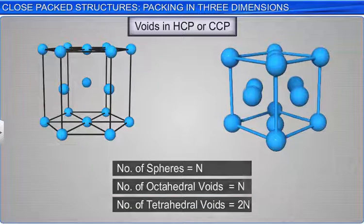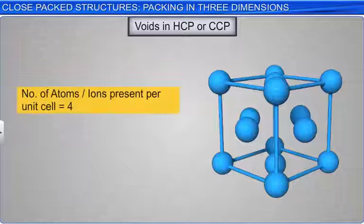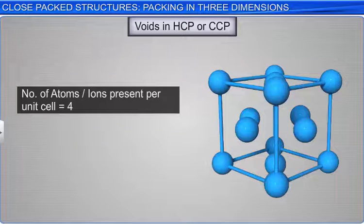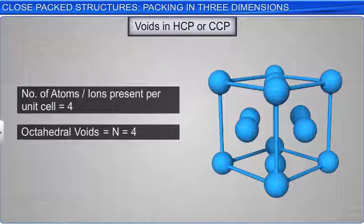For example, in a CCP arrangement, if four atoms or ions are present per unit cell, then the number of octahedral voids is also 4, while the number of tetrahedral voids is 8.